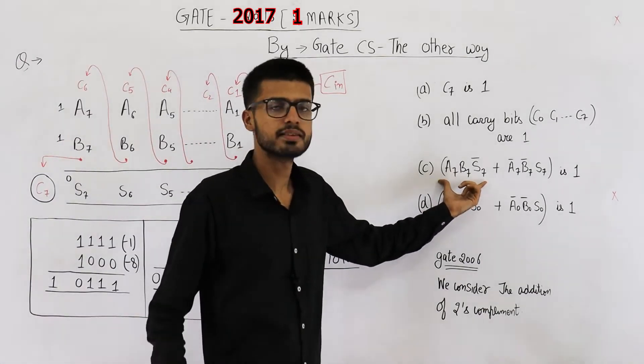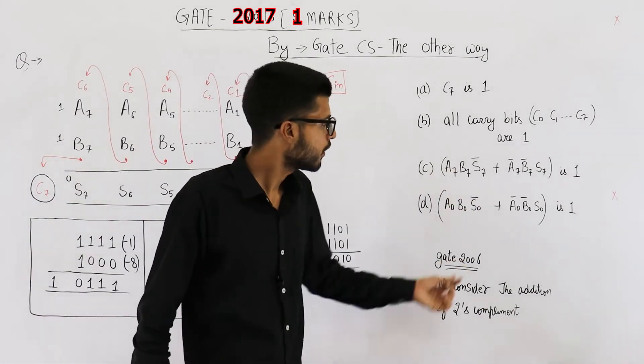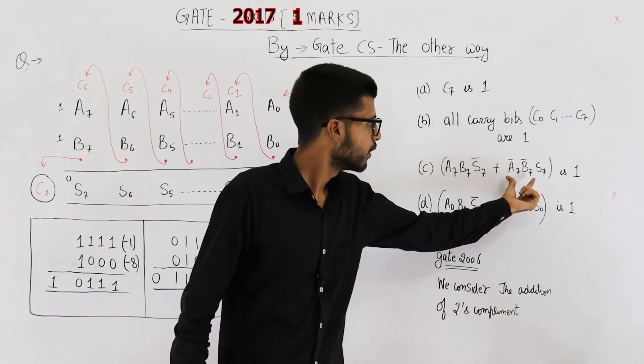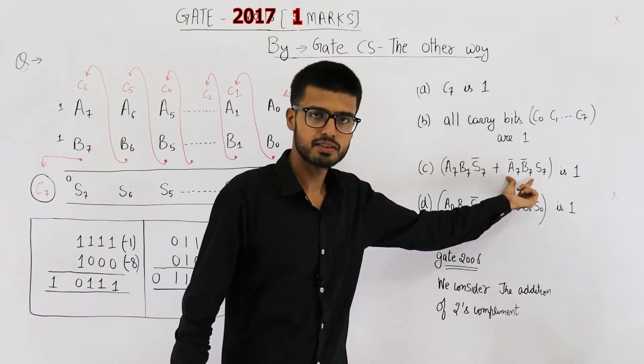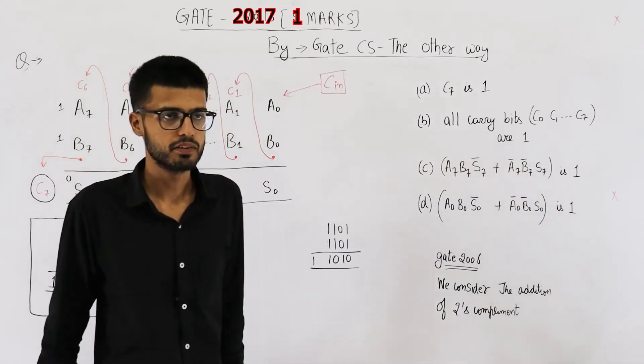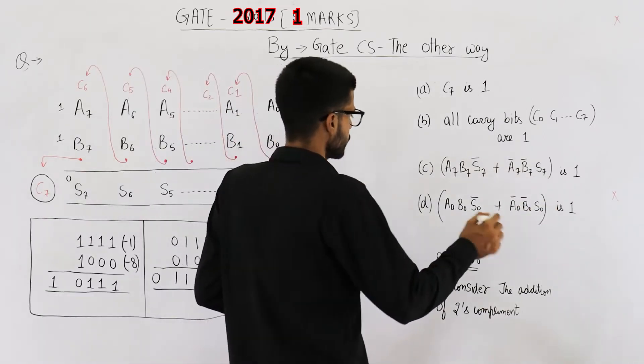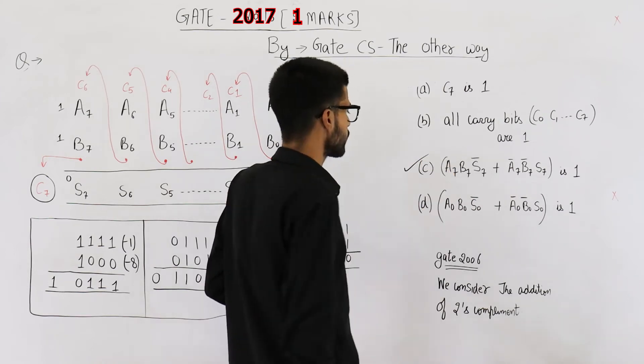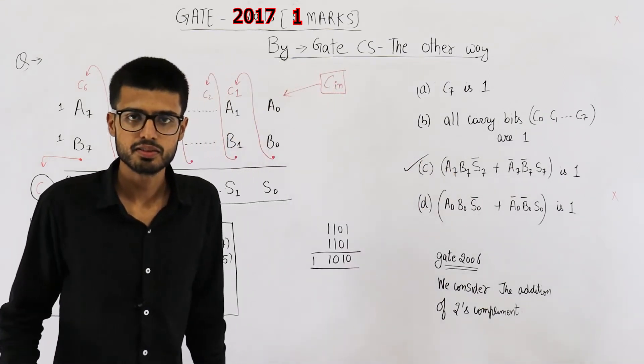So this one is condition of overflow. Or the other case is when A7 bar, B7 bar, S7, that means two positives are added and the sum is negative. So in this case also, there will be overflow. That means our answer is option C.